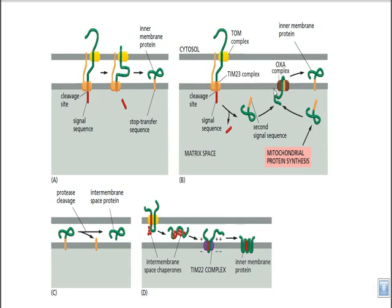Not only the OXA complex — another complex also helps this process: the TIM22 complex. In the TIM22 pathway, there is no mitochondrial destination signal sequence; instead, there is a hydrophobic stretch of amino acid sequences in the protein chain. Whenever the protein comes in contact with the TOM complex — which is the ultimate receptor for any molecule that has to enter the mitochondria — it is recognized and processed.